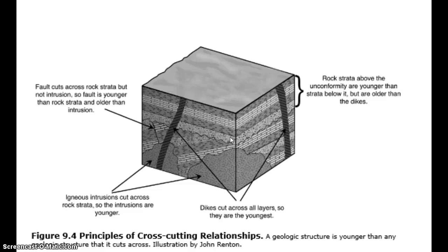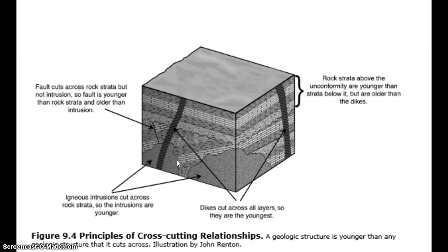But wait — I see that the igneous intrusions at the bottom, these here, cut across the tilted strata. You can see the margins of this igneous intrusion cut across the tilted strata. According to the principle of cross-cutting relationships, which says that any feature which truncates or cuts another is the youngest, these igneous intrusions have to be younger than these tilted strata.